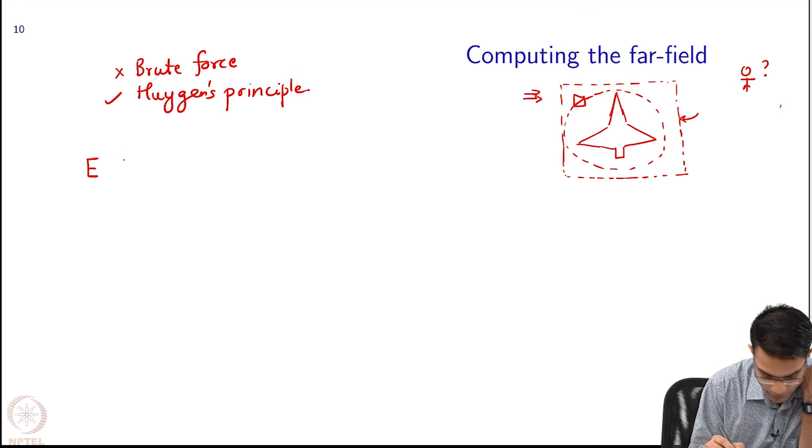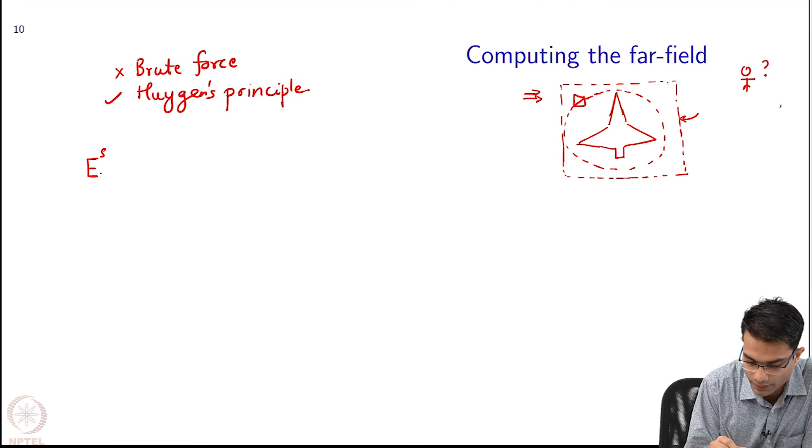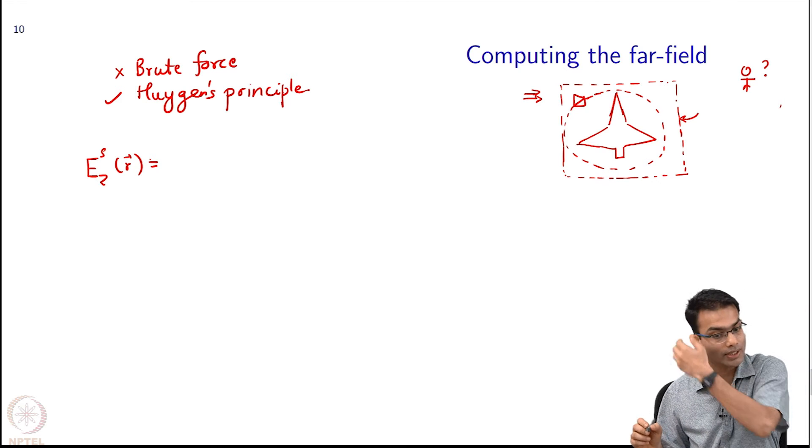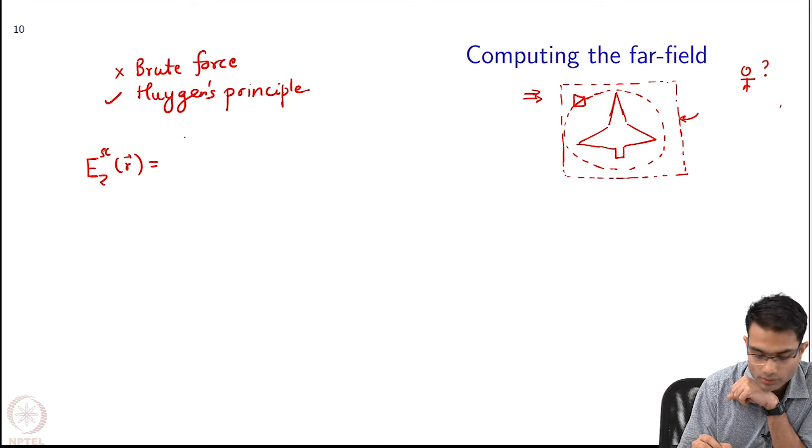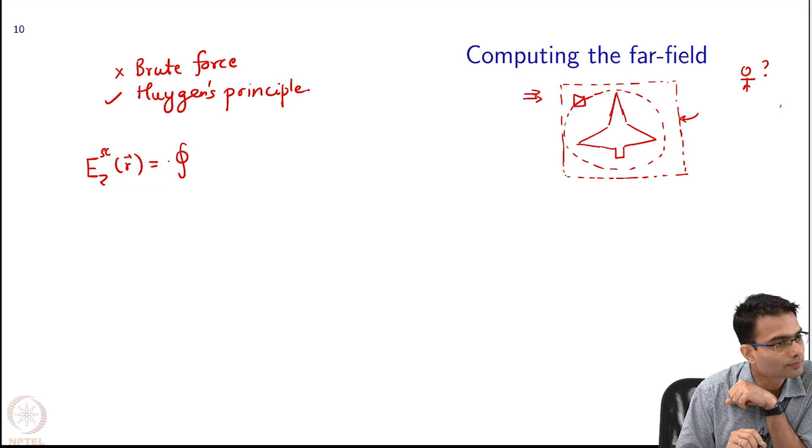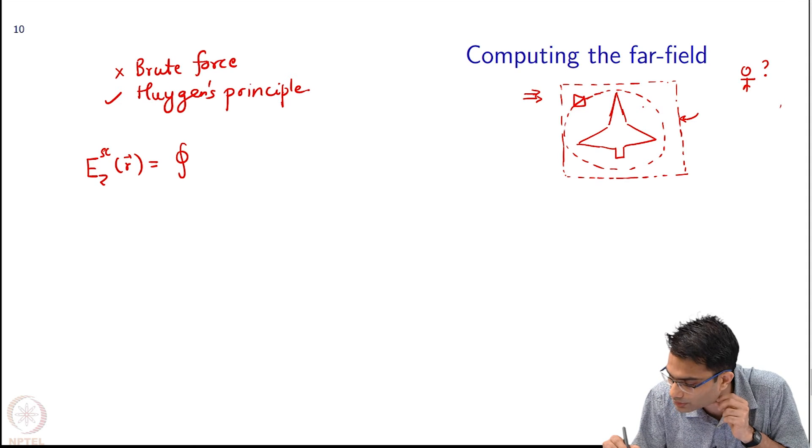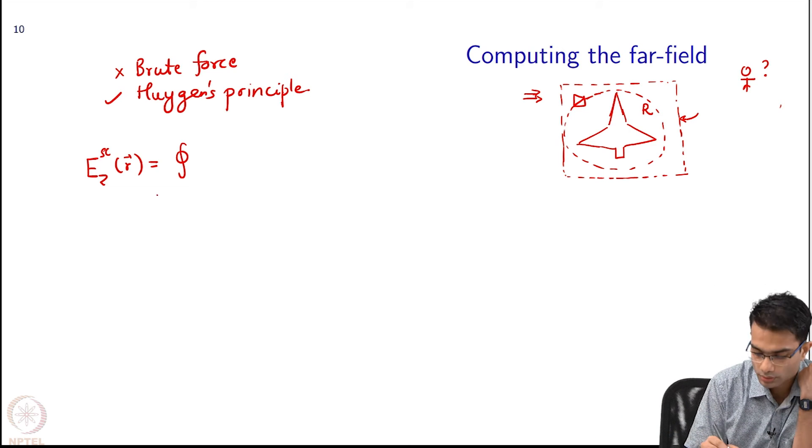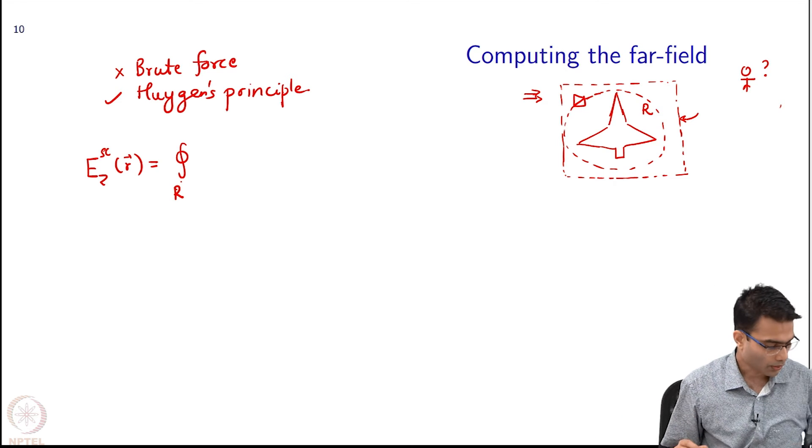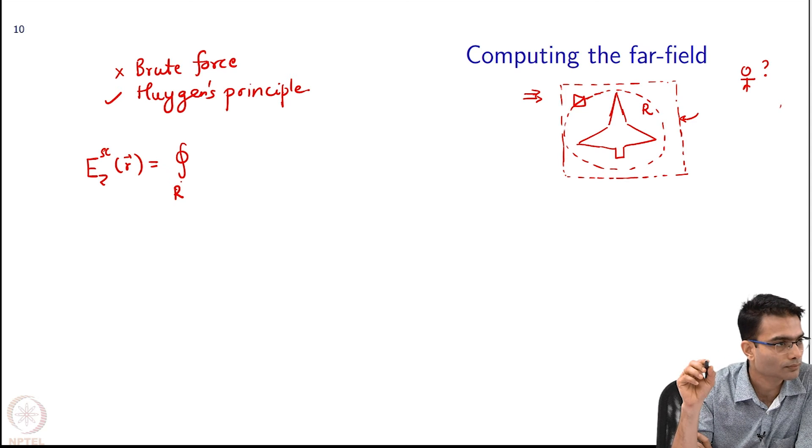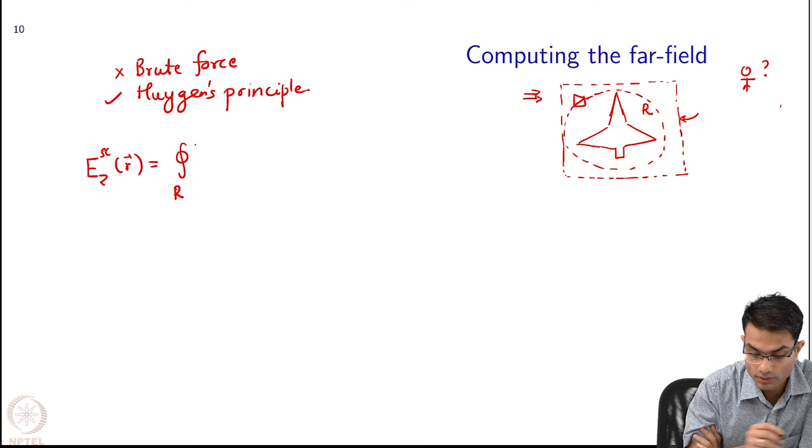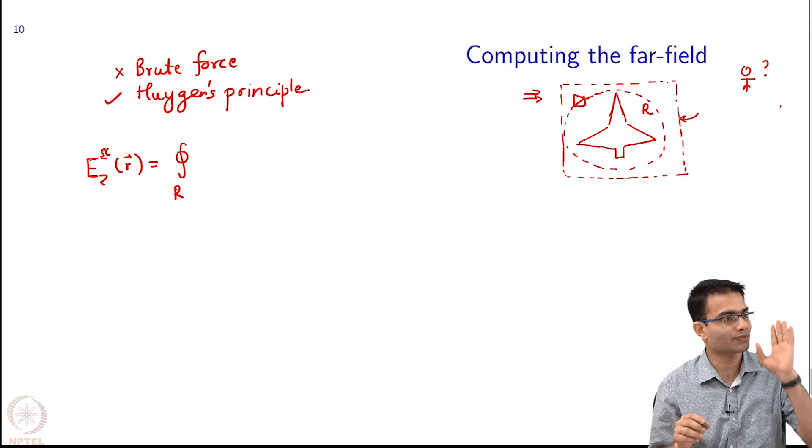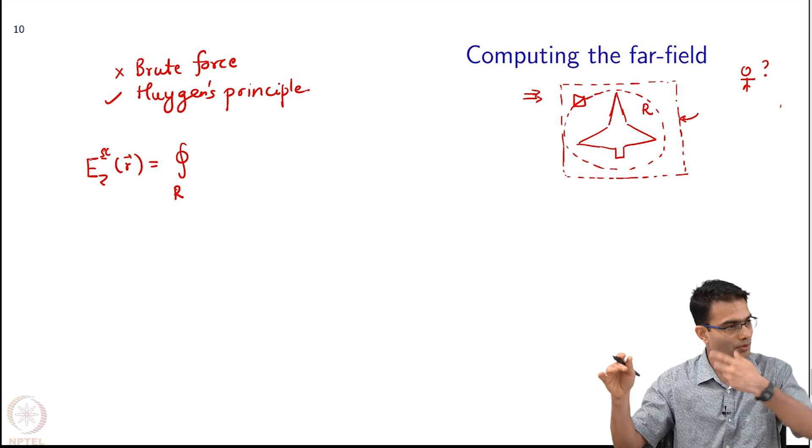So for example, we already this is an expression which we have calculated several times the field at any R as per Huygens principle. So E s is scattered that is what I want. What is that an integral? It is a contour integral over let us call this you know a contour R. What are the terms that will come here? Phi incident. So this is scattered only. So it is the E total is phi incident plus phi scattered. So remove the phi incident. So I am only calculating the scattered field.